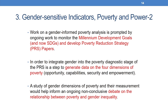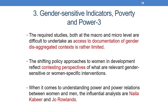Work on gender-informed poverty analysis is prompted by monitoring of the Millennium Development Goals and now the Sustainable Development Goals. Various poverty reduction strategy papers have emerged, and integrating gender into the poverty diagnostic stage requires generating data on four dimensions: opportunity, capabilities, security, and empowerment. A study of gender dimensions of poverty would inform the ongoing debate on the relationship between poverty and gender inequality. However, required studies at macro and micro levels are difficult to undertake as access to gender-disaggregated documentation remains limited.